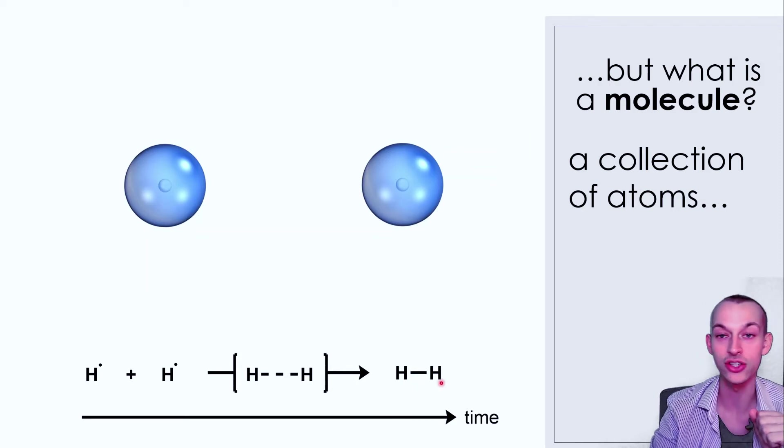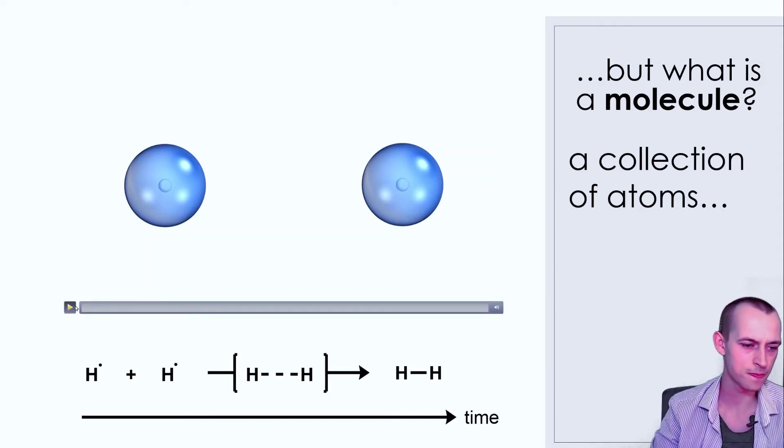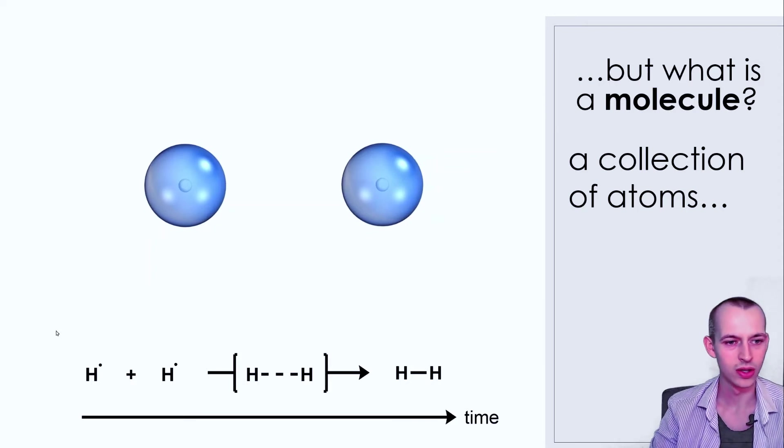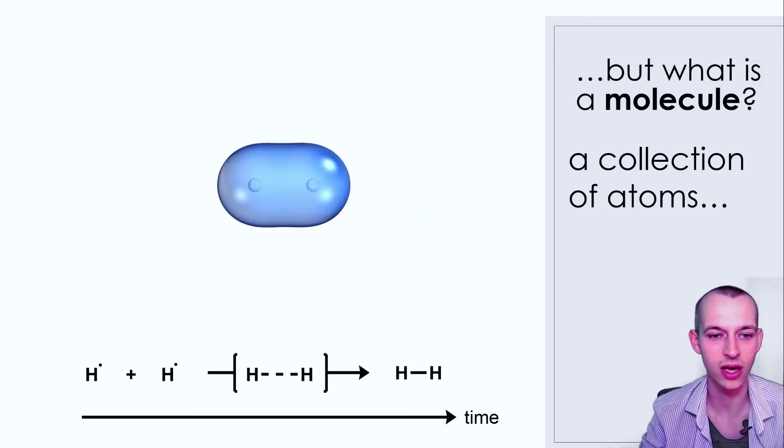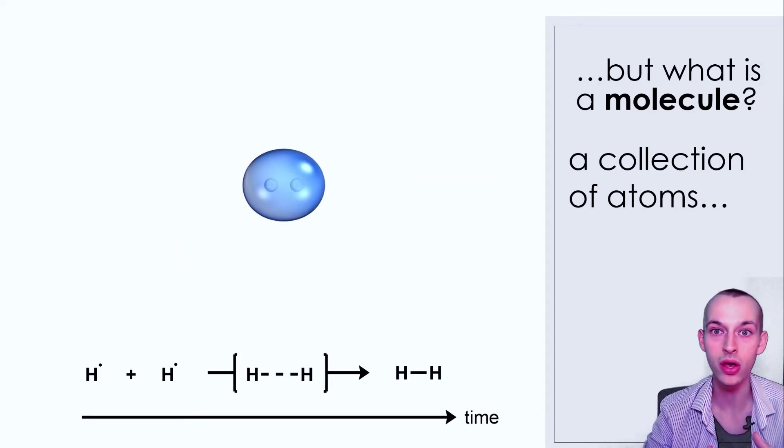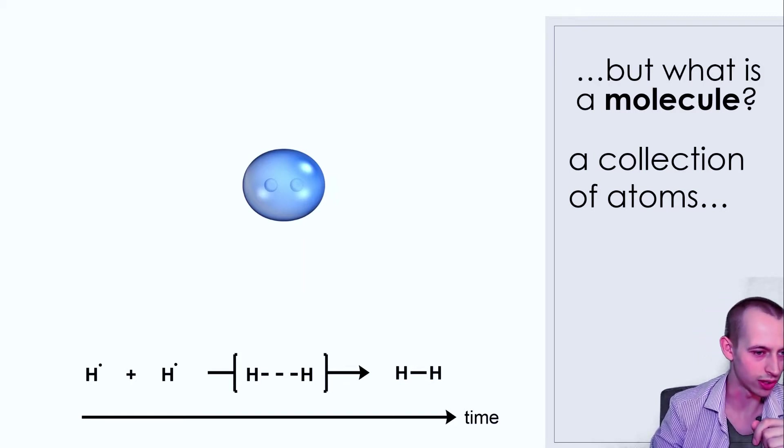Let's see what that looks like. The two hydrogen atoms are approaching each other. The orbital surfaces touch, they mix, they merge, and they form a bond represented by this orbital.